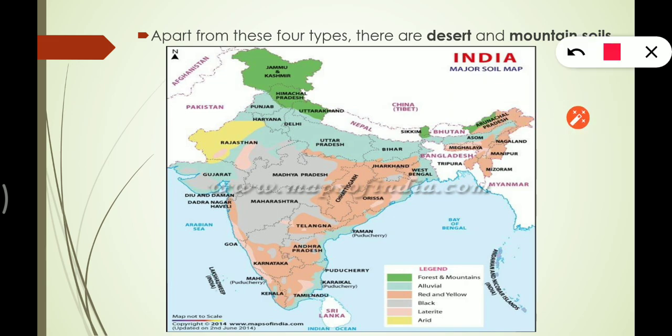Apart from these four types, there are also desert soils and mountain soils, found in their respective regions — desert soil in desert areas and mountain soil in mountainous regions. Let's see them on the map.